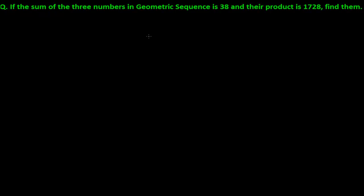Welcome, friends. After getting some concept of geometric sequence, let's do a problem. If the sum of three numbers in a geometric sequence is 38 and their product is 1728, find them. It simply means there are three numbers in geometric sequence whose sum is 38, and if you multiply all three numbers the product is 1728. What are those three numbers?